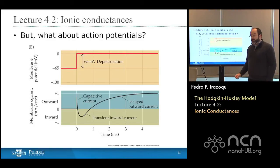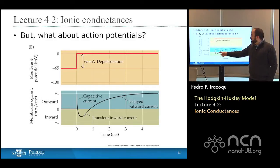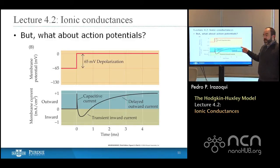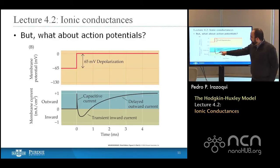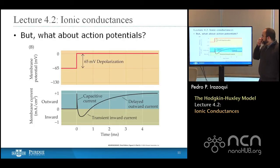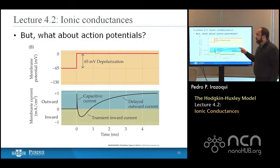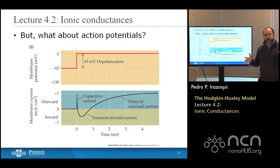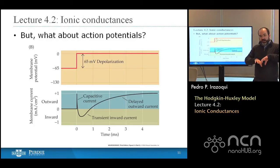Looking at the response to a depolarizing pulse, you see a transient inward current representing sodium ions rushing into the cell to depolarize it, followed by a delayed outward current representing potassium ions flowing out to reestablish the resting membrane potential. During a normal action potential, this delayed outward current lasts until the resting membrane potential is restored and drops back to zero. In this particular case it doesn't, because the depolarizing pulse never ends — as long as we clamp the voltage to zero volts, potassium will always flow out.